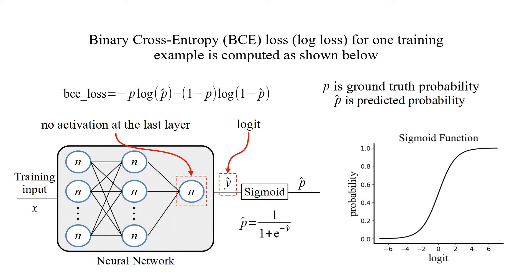Binary cross entropy loss or log loss for one training example is computed with this equation. P is ground truth probability and P hat is predicted probability.